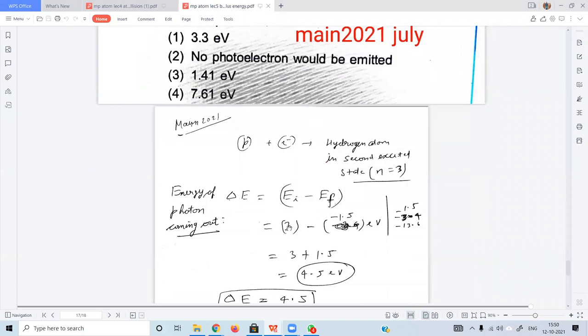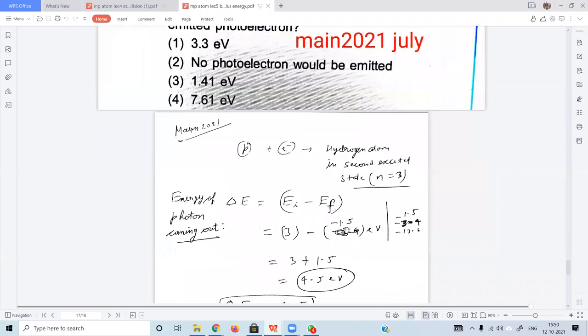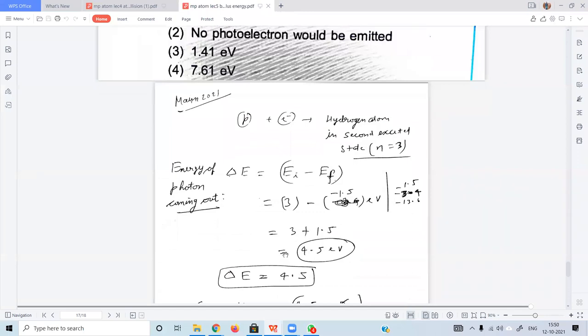The mechanical energy of the excited state is minus 13.6 divided by n squared. Initial was 3 eV kinetic energy. For the second excited state, the final mechanical energy is minus 1.5 eV. So the energy difference is 13.6 minus this. Initial energy was 3 plus 0, final energy was minus 1.5, so the change is 4.5 eV.